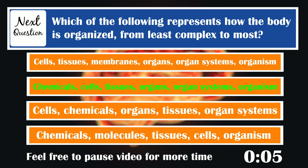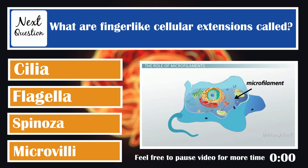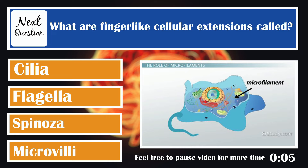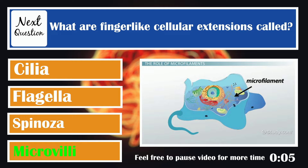What are finger-like cellular extensions called? Finger-like projections are called microvilli. The hair-like projections are called cilia, and the whip-like solitary projections are called flagella, like in the sperm.